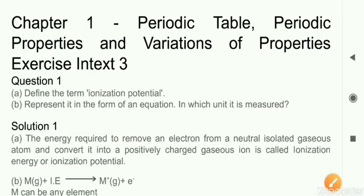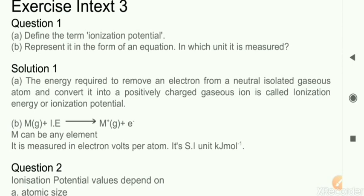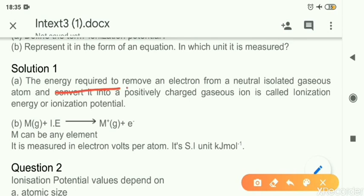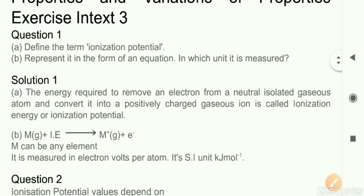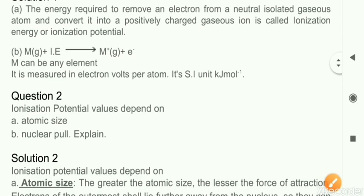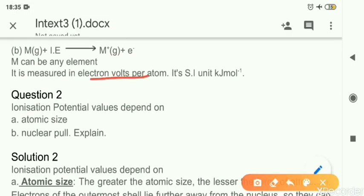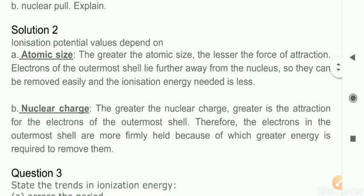Let us now discuss the index exercise questions from part three. Question 1: Define ionization potential and represent it in the form of an equation with its unit. The definition is: it is the energy required to remove an electron from a neutral gaseous atom and convert it into a positive gaseous ion. The equation is: M + IE → M⁺ (where M is any element). The units are electron volts per atom, and the SI unit is kilojoules per mole.